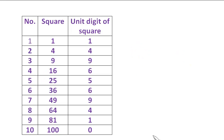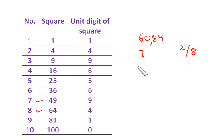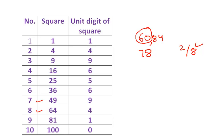Take 6084. Make the pairs: 84 and 60. Since 60 lies between the squares of 7 (=49) and 8 (=64), the tens digit is 7. For the unit digit, since 4 is the unit digit, the choices are 2 or 8. Multiply 7 by its next number: 7×8=56. Since 60 is greater than 56, choose the greater number: 8. So the square root of 6084 is 78.